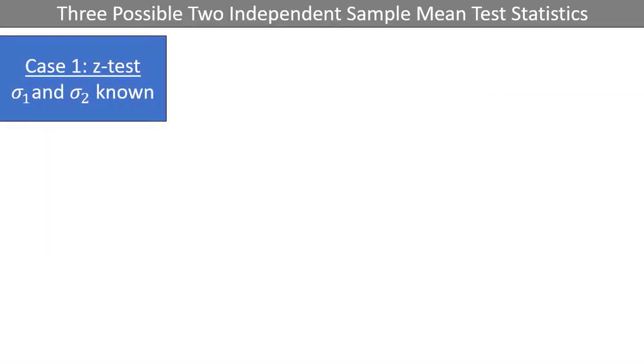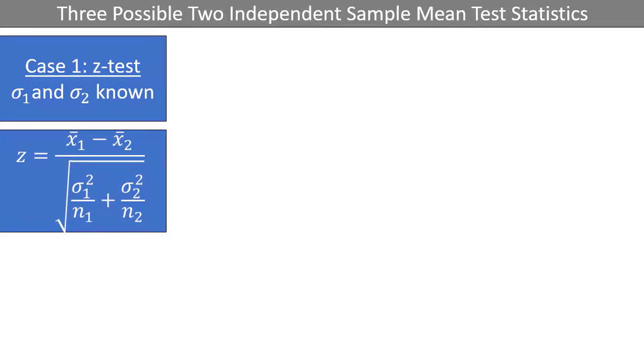Case 1 is the z-test, which should be used when the population standard deviations are known. Here is the test statistic. If you haven't caught on already, values with a subscript 1 correspond to the first sample, and values with a subscript 2 correspond to the second sample. As it is unlikely that the standard deviations will be known, we will not be showing the z-test procedure in this video.